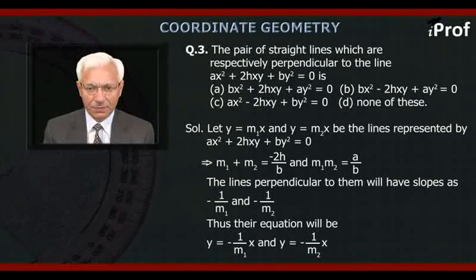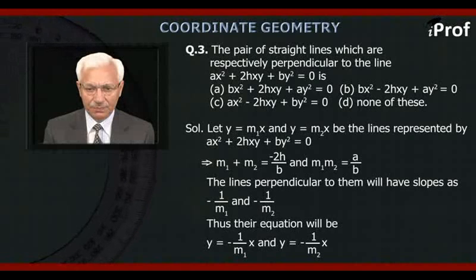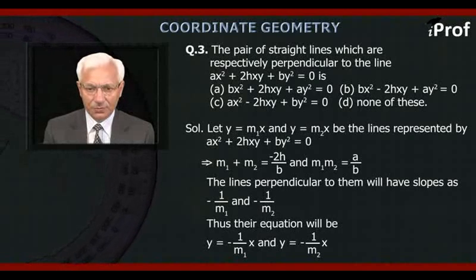Option A: BX² + 2HXY + AY² = 0. Option B: BX² - 2HXY + AY² = 0. Option C: AX² - 2HXY + BY² = 0. Option D: None of these.